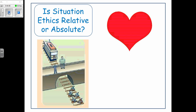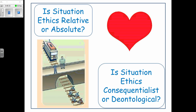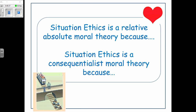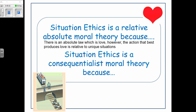The answer is it is actually a bit of both. What you do — the action — is relative to the situation, but there is still an absolute good, which is love. Love is absolute in every situation, but what produces love is relative. Fletcher calls this the relative absolutes: there is an absolute law — love — however the action that best produces love is relative. It is consequentialist because the only thing of importance is the consequence of love.